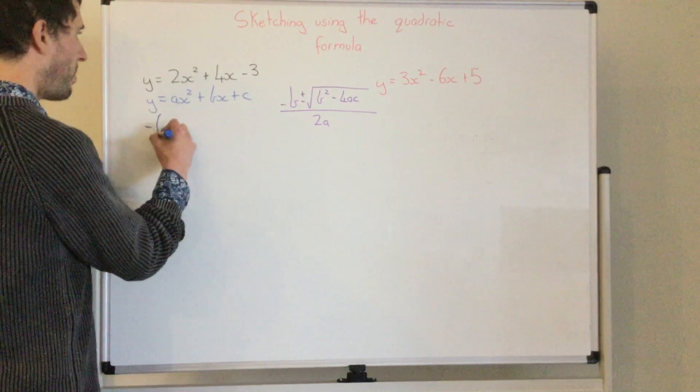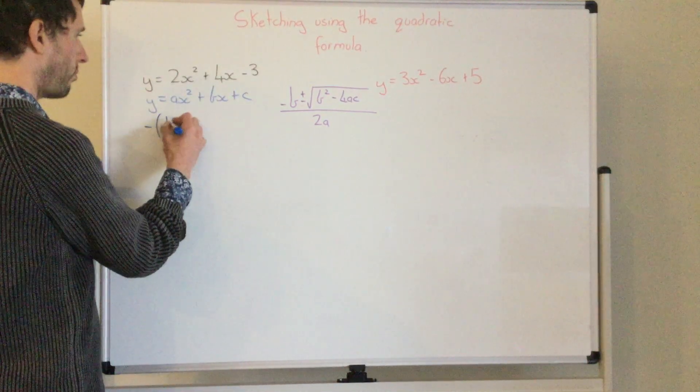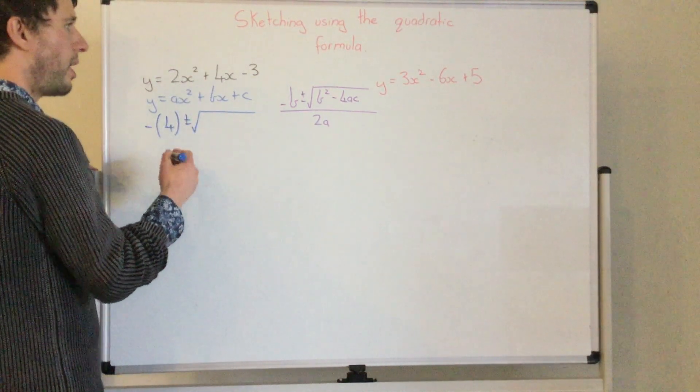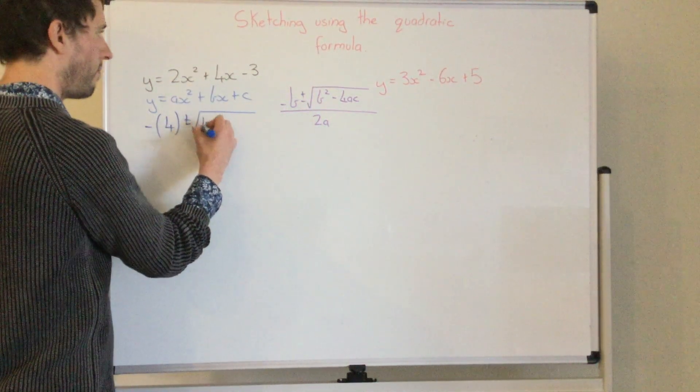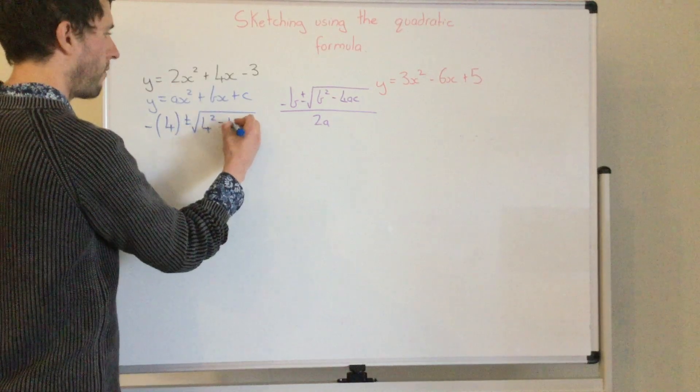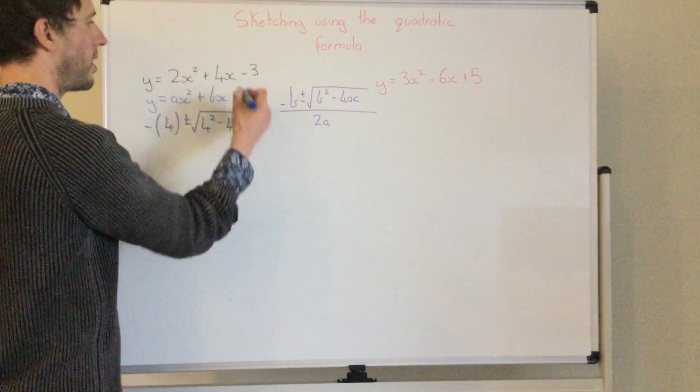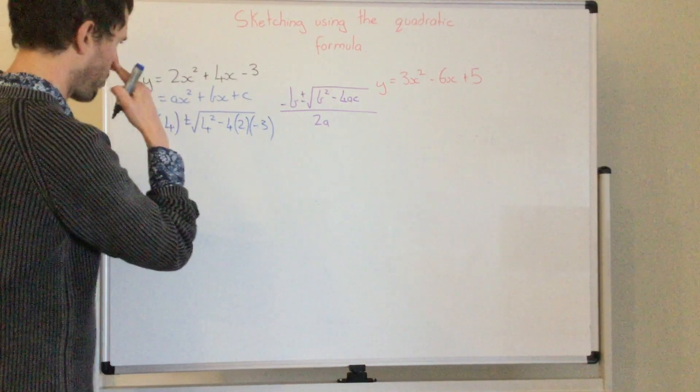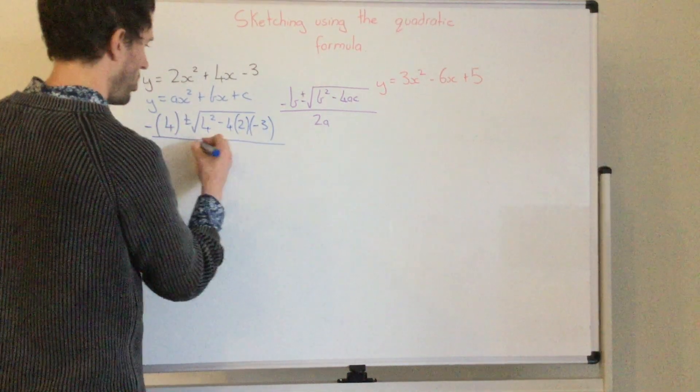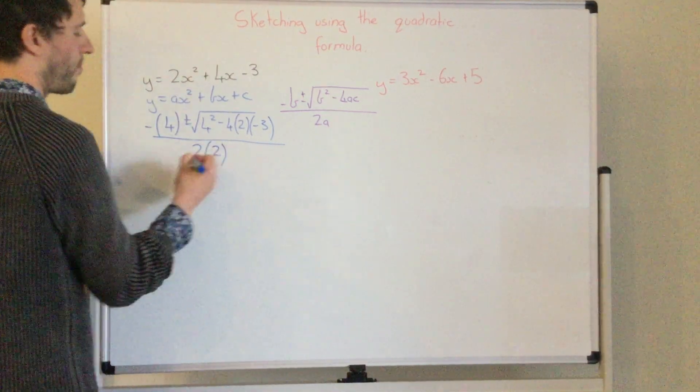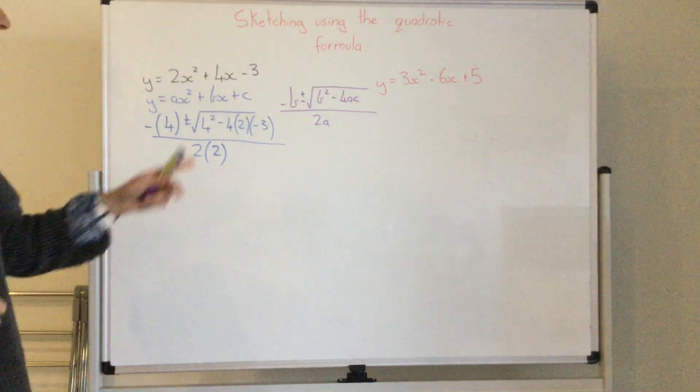So negative then I've got b, b is 4 plus or minus the square root of 4 squared minus 4 times 2 times negative 3 divided by 2 times a is 2. So all my inputs I've just put in brackets.